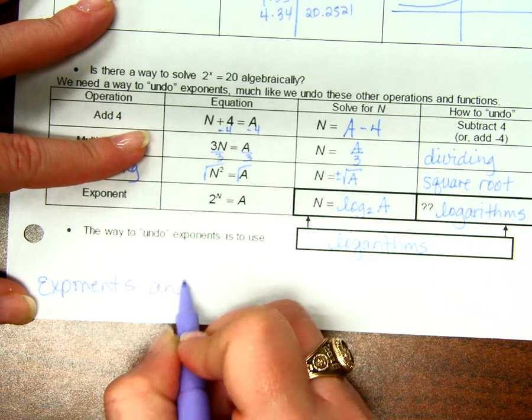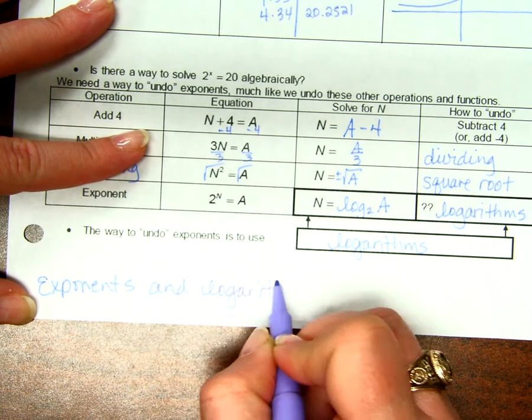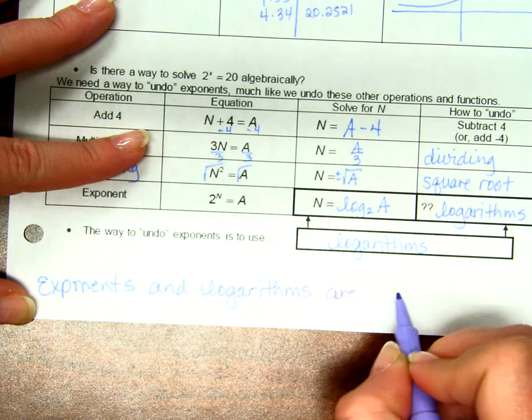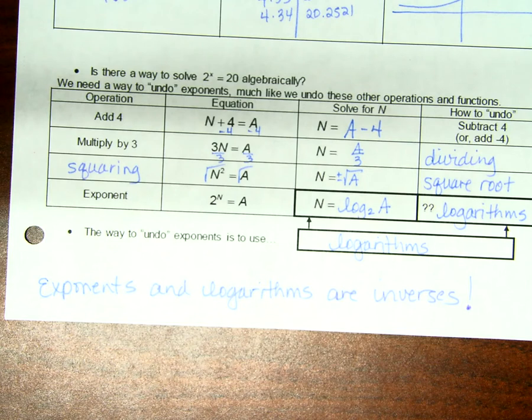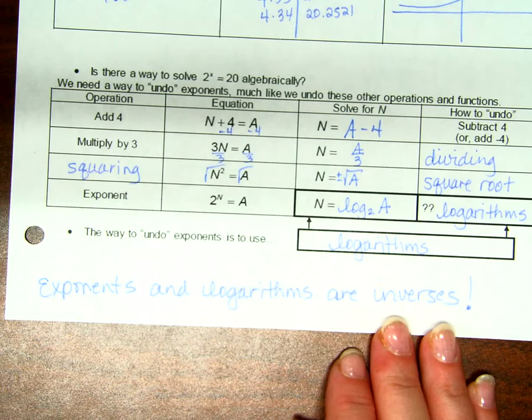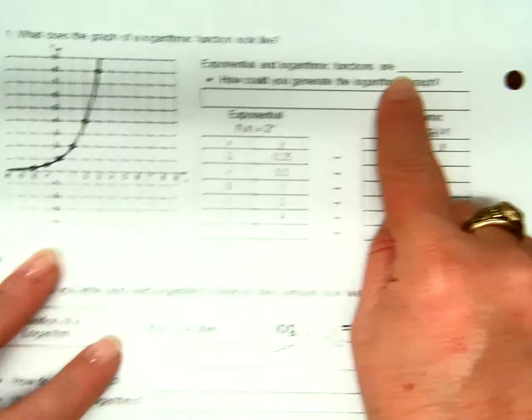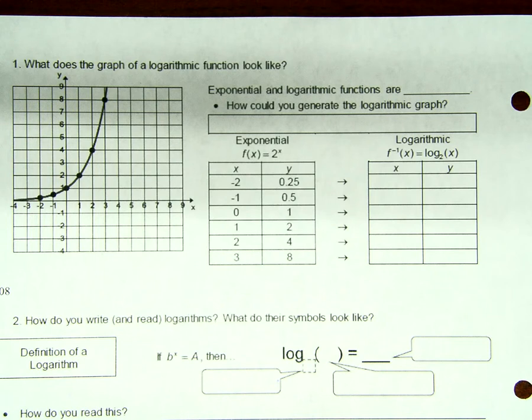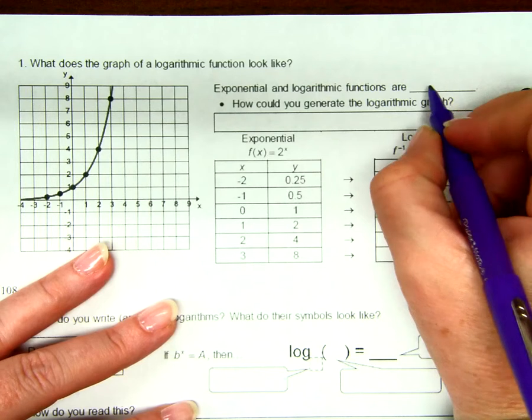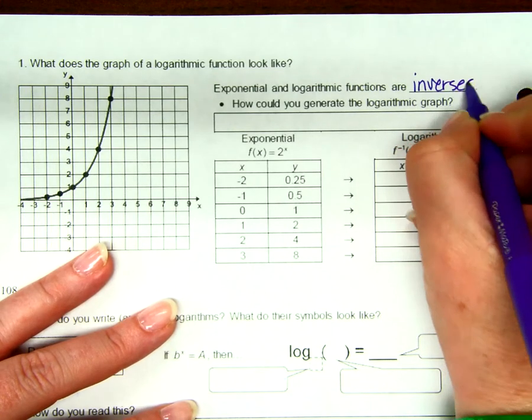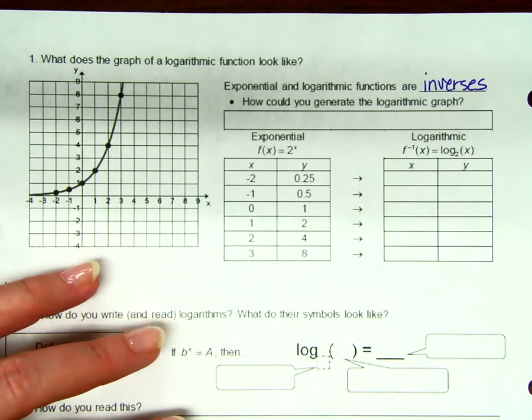So we're going to write that down at the bottom of this page. Okay? Exponents and logarithms are inverses, like inverse operations of each other. They are inverses, inverse functions. Okay? Now, we wrote it once, right here, and then it asks us again, right here. So why did I make you write it twice? Because it's important. Exponents and logarithms and logarithmic functions are? They are inverses. Okay? Guys, how do you find inverse functions? Do you remember that?